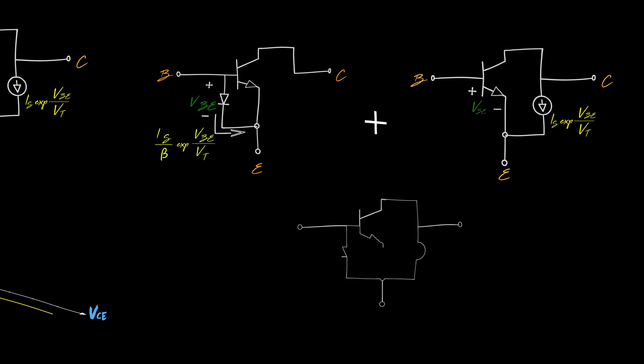This is called the large signal model. Each time you find the BJT in a circuit, you can replace it with this model. Most of the time we deal with small input signals, which enable us to work with a simpler version of that model — the small signal model, which we will cover in the next tutorial.